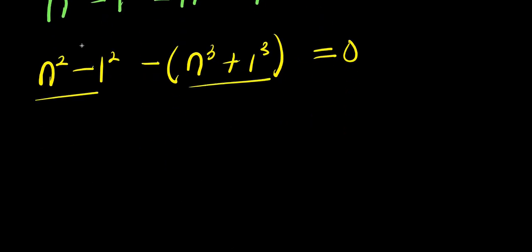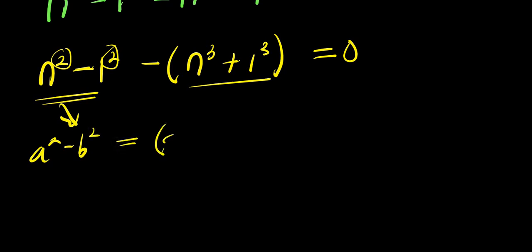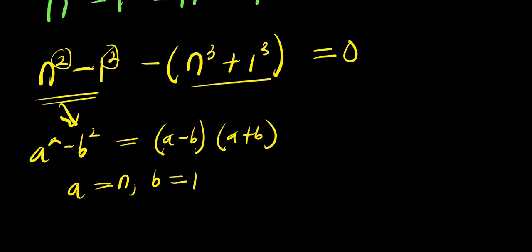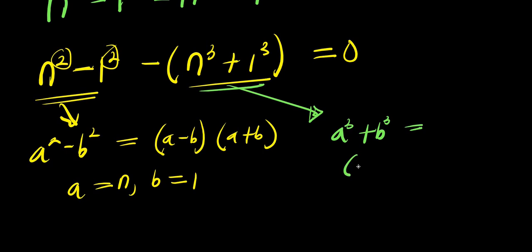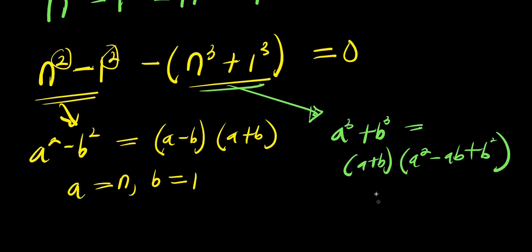We need to expand each of these grouped terms. For the first group, since both terms are squared with a minus sign, we use the difference of two squares: a squared minus b squared equals (a minus b)(a plus b), where a is n and b is 1. For the second group, we use the sum of cubes identity: a power 3 plus b power 3 equals (a plus b)(a squared minus ab plus b squared), again with a equals n and b equals 1.